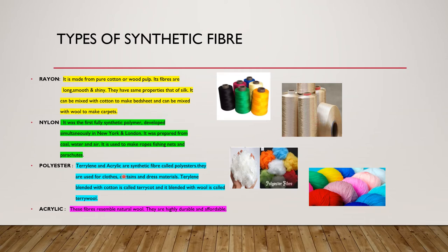Polyester: Terylene and acrylic are synthetic fibers called polyesters. They are used for clothes, curtains and dress materials. Terylene blended with cotton is called terricot, and blended with wool is called terry wool. The fibers of polyester are long and smooth. These fibers do not absorb stains and are easily washable. They are crease proof and may be used as wash-and-wear clothes. They are not suitable in summer as they do not absorb water and do not allow air to pass through. This is a picture of polyester fiber.